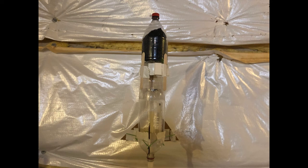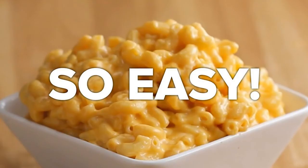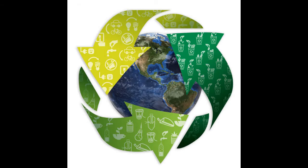Water rockets are a type of rocket that uses pressure in water to generate thrust. Water rockets are cheap, easy to make, and environmentally friendly. So how do they work?